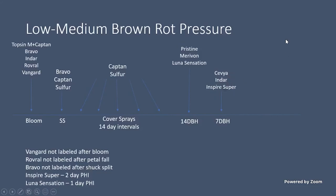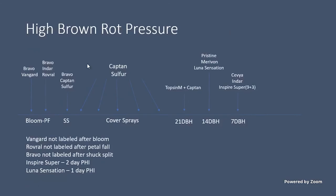For higher brown rot pressure, add another bloom spray so you have two bloom sprays, then a shuck split spray, cover sprays, and an additional pre-harvest spray. Basically, add Topsin in with Captan — it's always recommended to add Topsin with Captan to reduce resistance issues — then pick one of the Group 7-11s and one of the Group 3s. Most of our fungicides have a zero-day pre-harvest interval; Inspire Super and Luna Sensation are the only two with more than zero days, so always pay attention to that. Realistically, the 21-14-7 day plan hardly ever works perfectly — you deal with rain, harvesting, and wind — so it may be 10 days, it may be three days; just try to get some of these sprays out before harvest.